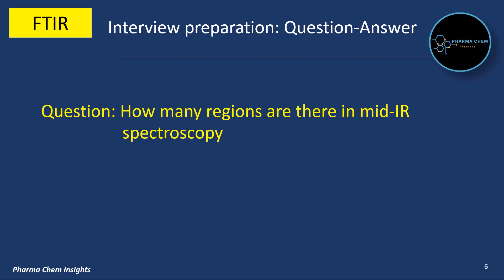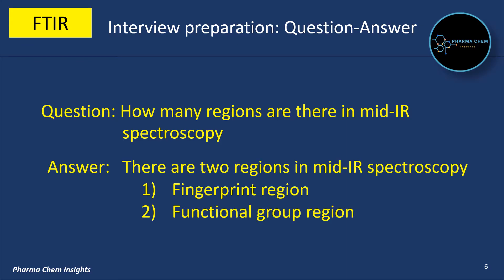How many regions are there in mid IR spectroscopy? There are two regions in mid IR spectroscopy. The first is the fingerprint region and the other is the functional group region.